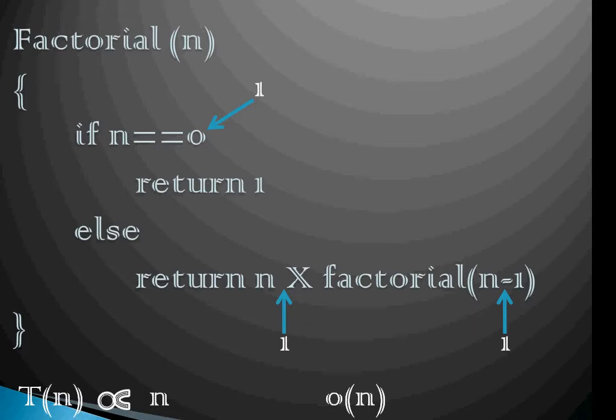So if we see for n greater than 0, we must first compare it with 0 which is one simple operation. So this has a cost of 1 unit.